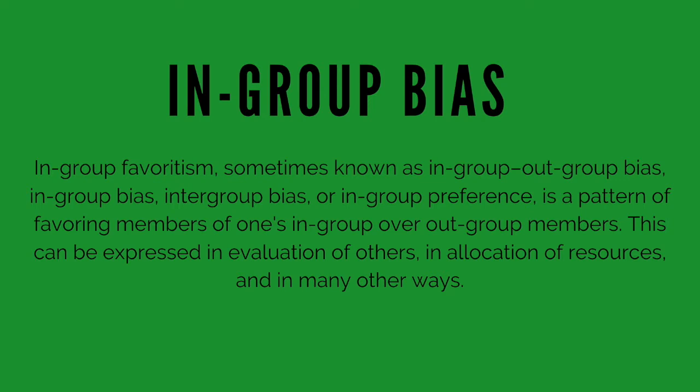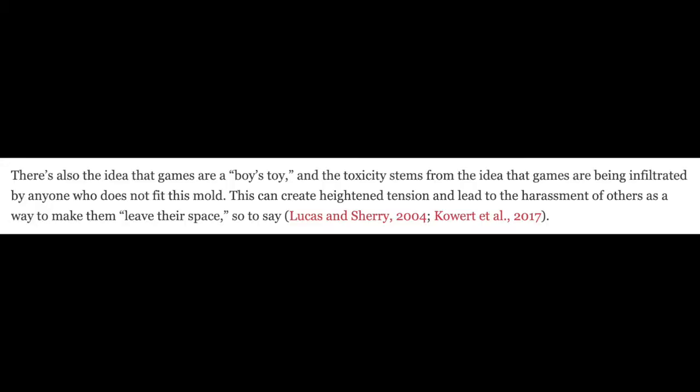A first category of biases I'm going to talk about are those specific to groups. For example, the in-group bias — the in-group bias refers to evaluating our in-groups, the social groups we belong to, as more diverse and basically better in many respects than out-groups, groups we don't belong to. This in-group out-group bias underlies some of the toxicity, hostility, and dark participation in games towards anyone who doesn't fit this stereotypical cisgender, white, heterosexual male in-group.